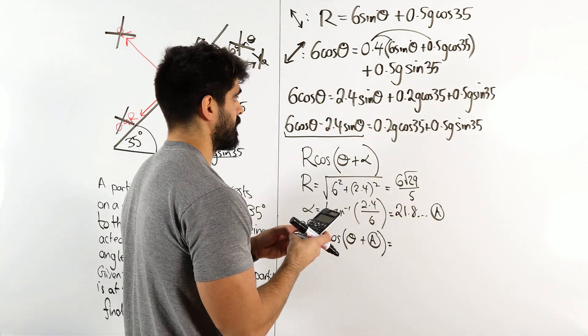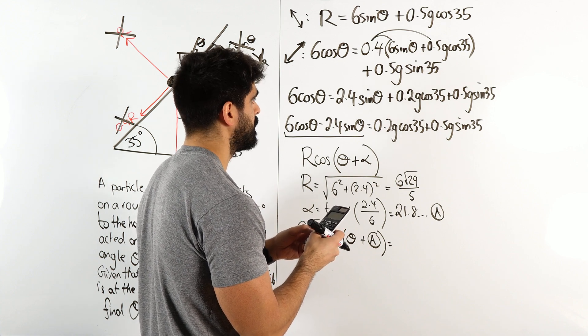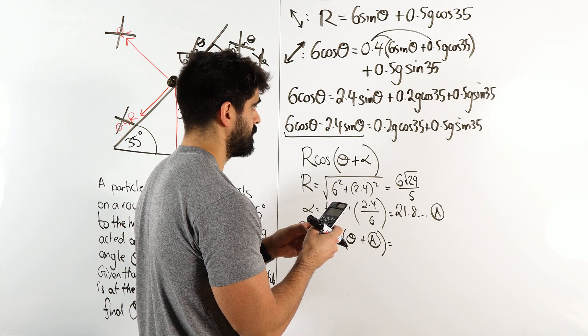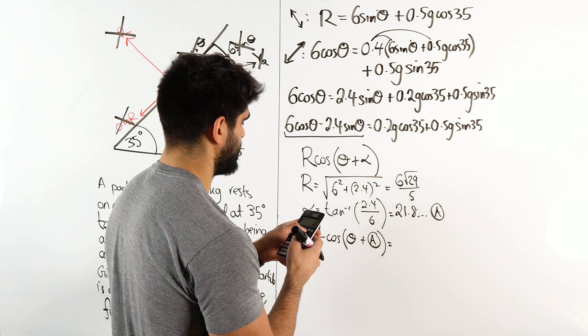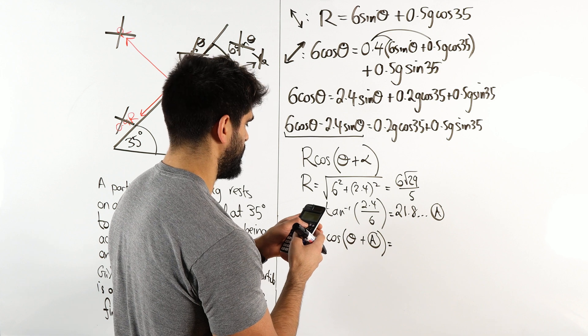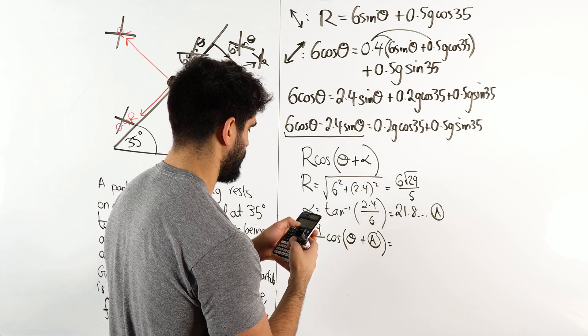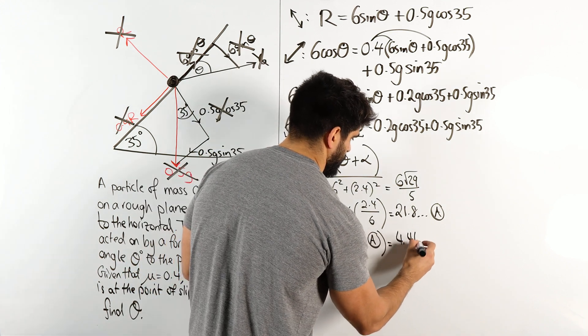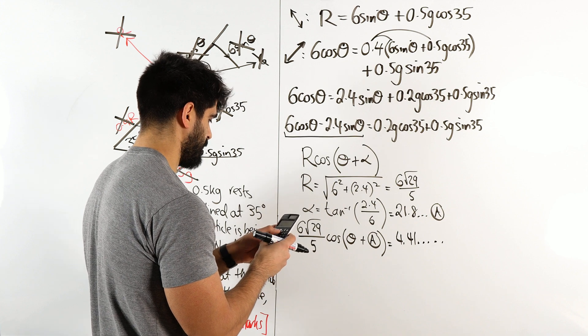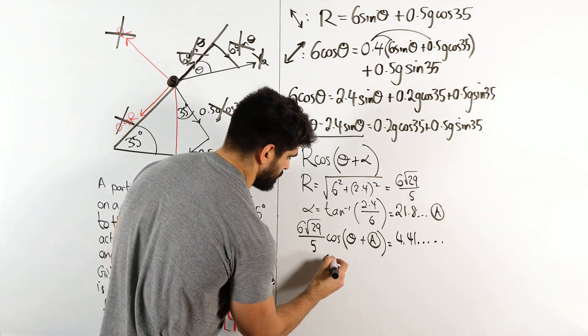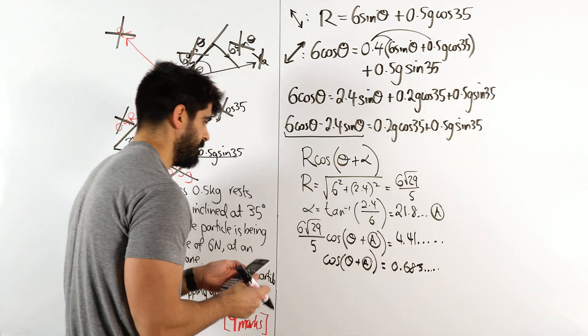I'm going to start typing that in. 0.2 times 9.8 cos 35 plus 0.5 times 9.8 sin 35. So 4.41, I'm just going to make sure that I've not made any silly mistakes. 0.2, 9.8 cos 35, 0.5, 9.8 sin 35. Cool. So we have 4.41 dot dot dot. I'm going to divide that by 6√29 over 5, which is 0.683 dot dot dot.